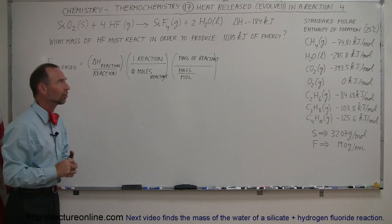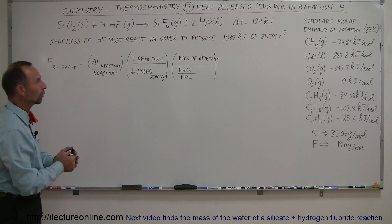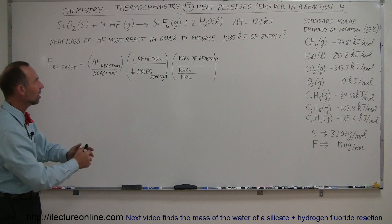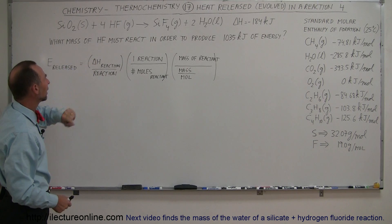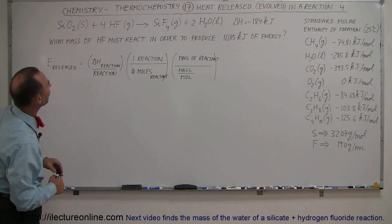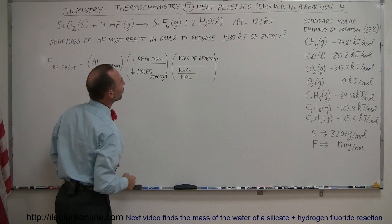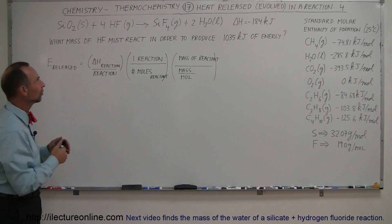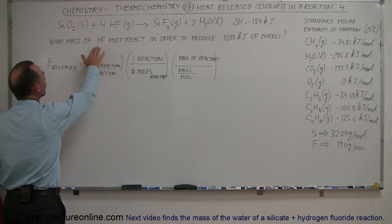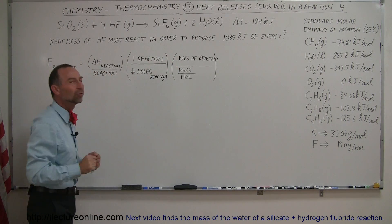The enthalpy is minus 184 kilojoules, indicating it's an exothermic reaction — it releases heat. So the question is: what mass of hydrogen fluoride gas must react in order to produce 1035 kilojoules of energy? How much hydrogen fluoride do we need in order to have that kind of energy release?